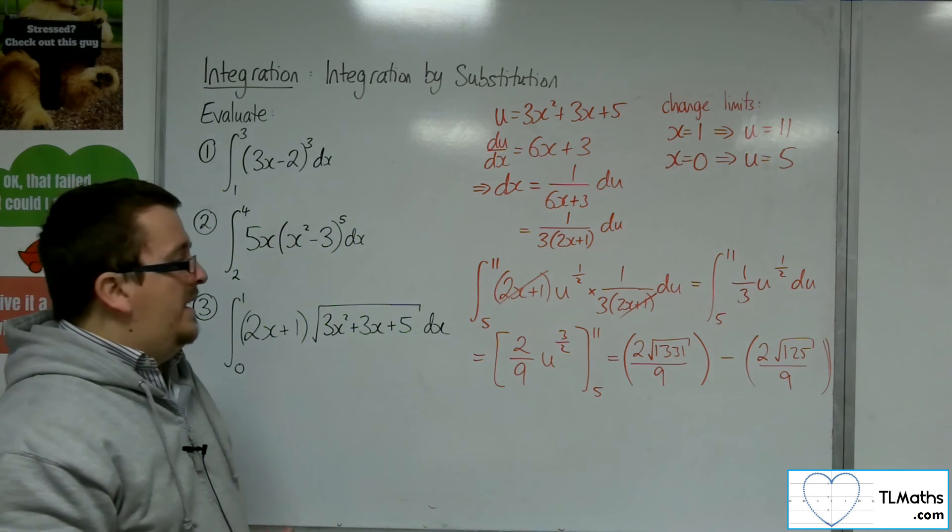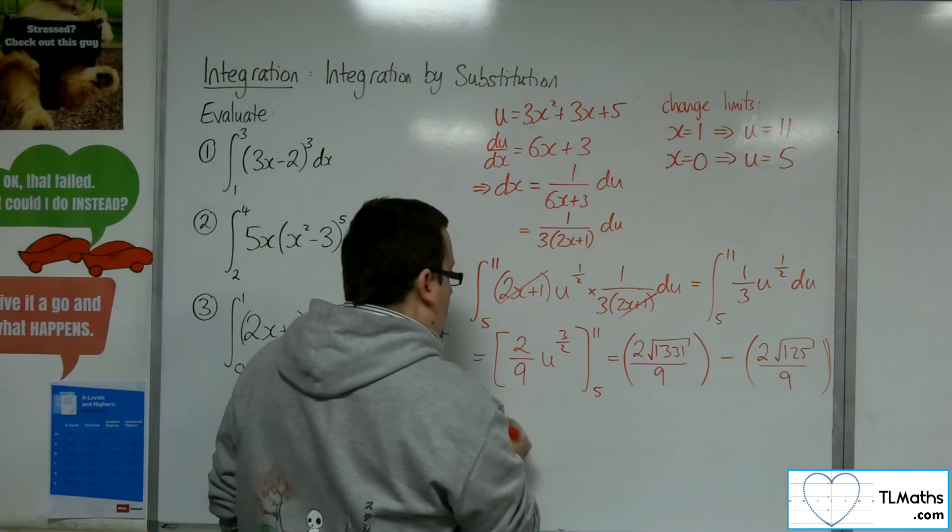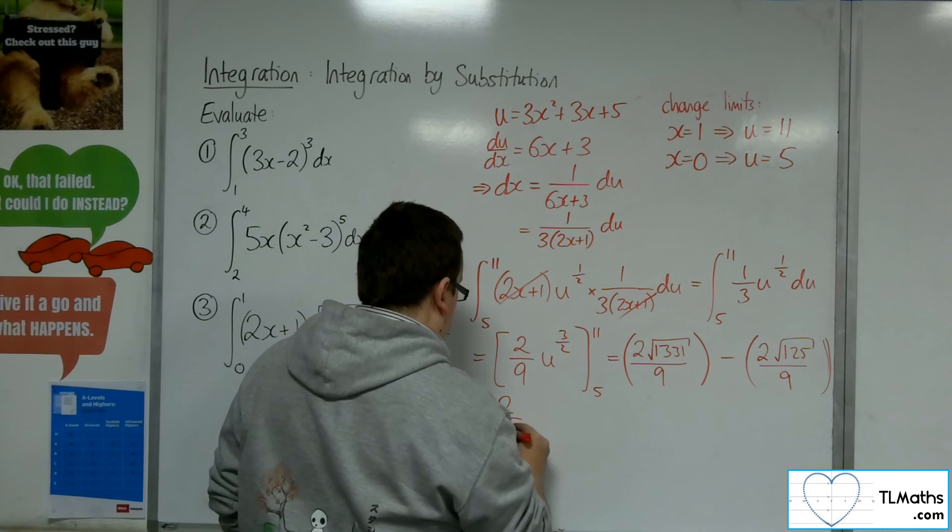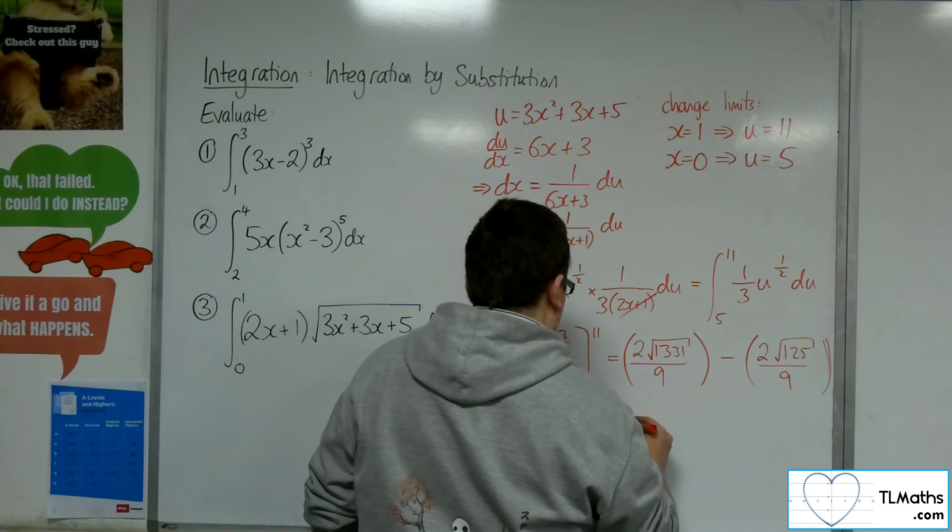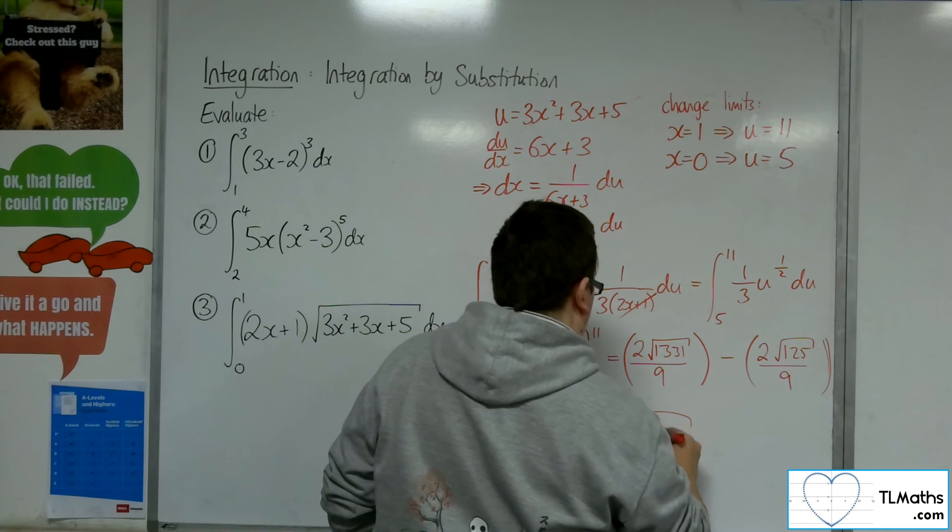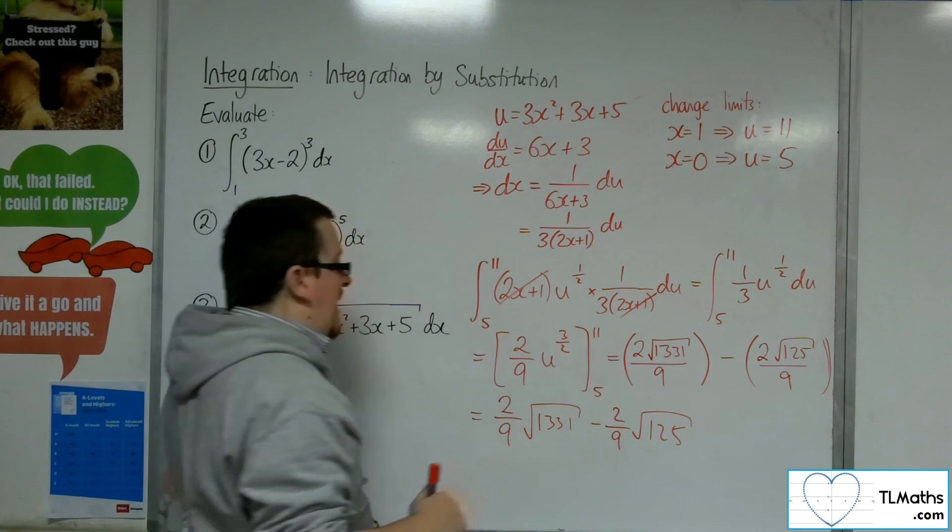Now I can't really do much with that. 2 ninths square root 1,331 take 2 ninths square root 125. That is the exact answer.